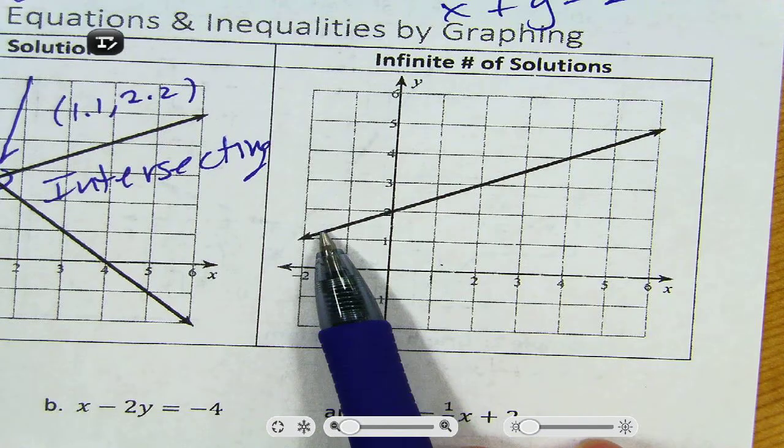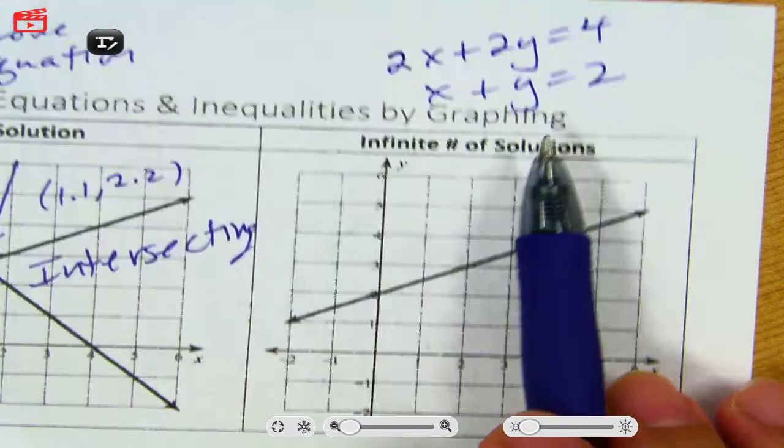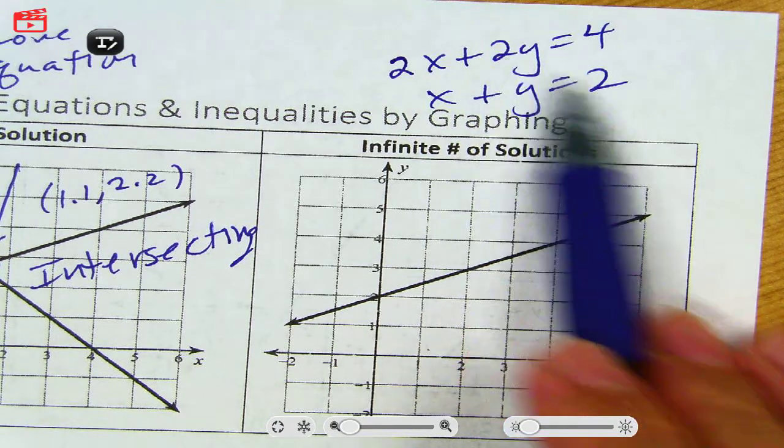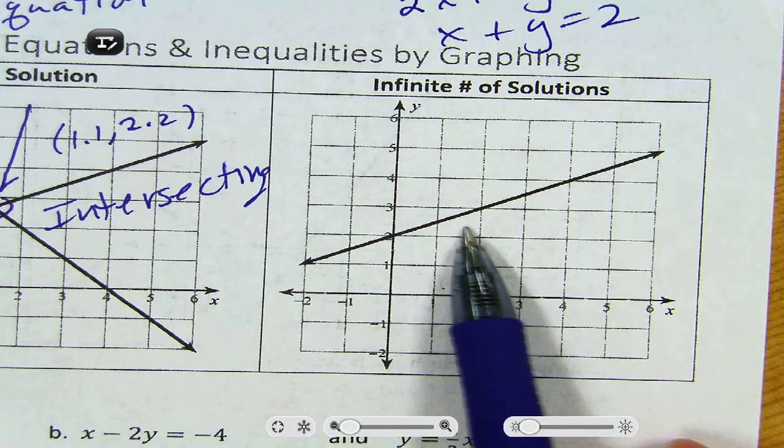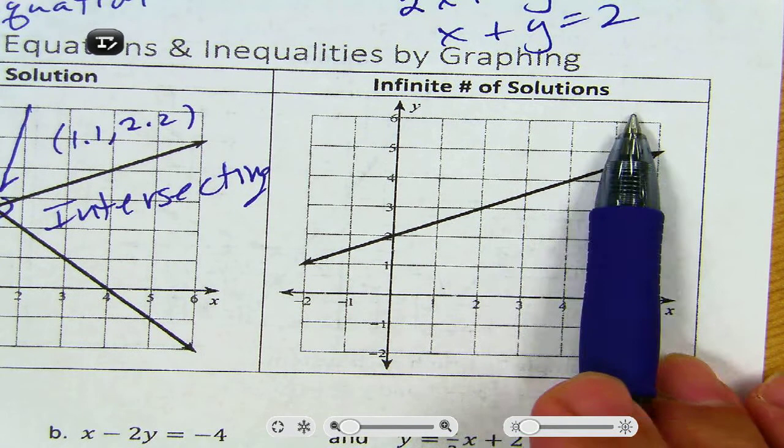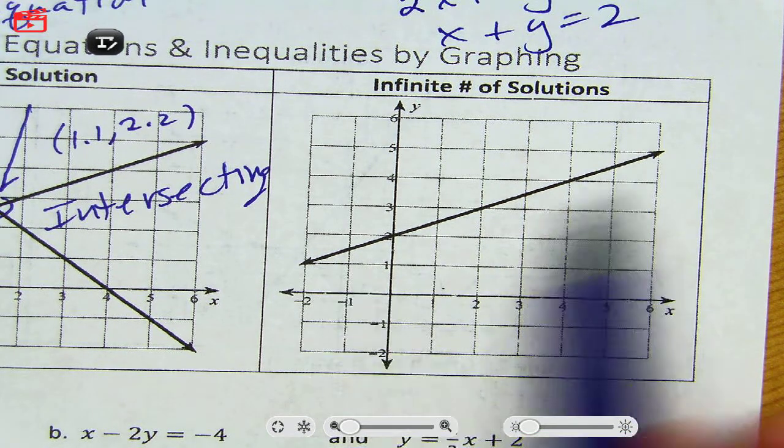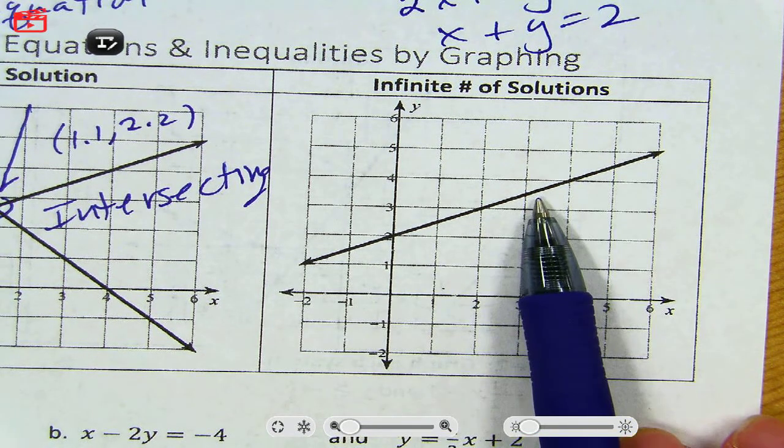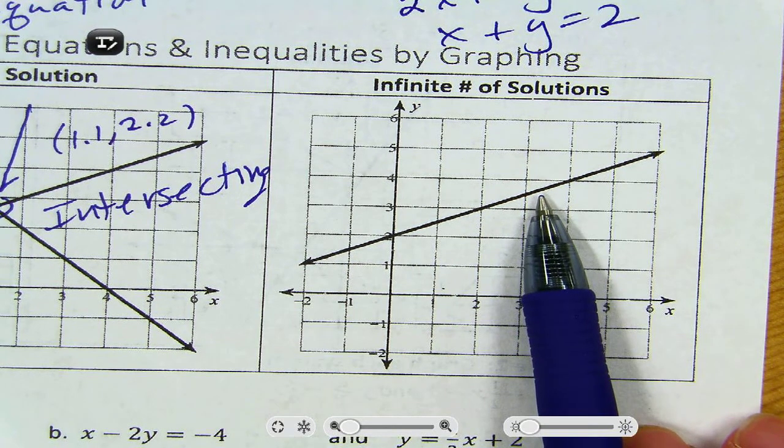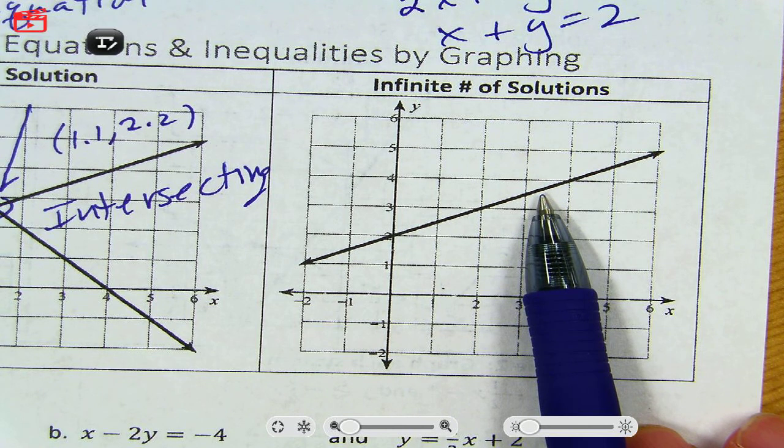And that's how you're going to get infinite number of solutions. Where I give you equations that look different, but they produce the same line. And we're going to have infinite number of solutions. Because they're in the same line, they intersect everywhere.